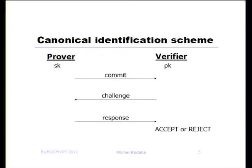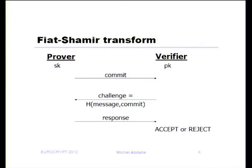In this talk, we'll be considering what is a typical three-move identification scheme, which we refer to as canonical, in which the prover first sends a commitment, obtains a challenge from the verifier, and the prover has to come up with a response. The decision of the verifier is going to be a deterministic function of the transcript of the conversation. The typical way of converting such identification schemes into a signature scheme is to use the Fiat-Shamir transform, in which we compute the challenge as the hash of the message and the commitment.